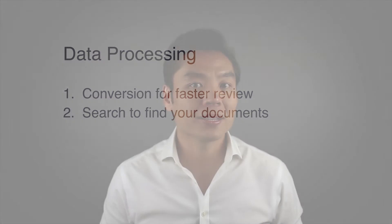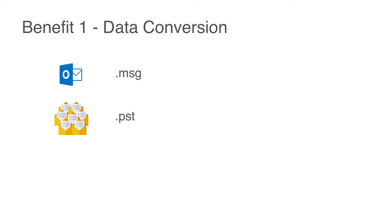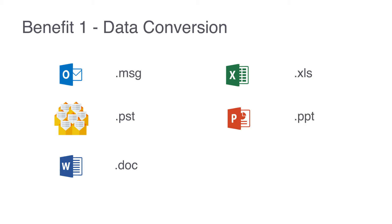Let's talk about data conversion. Data comes in all forms — just think about all the different types of files and programs you encounter every day. When you write an email in Outlook, that's an MSG file. All those emails are contained in a mailbox container file, sometimes called a PST. You create memos in Word, charts and tables in Excel, and presentations in PowerPoint. And you can even chat in Slack and send text messages in iMessage.